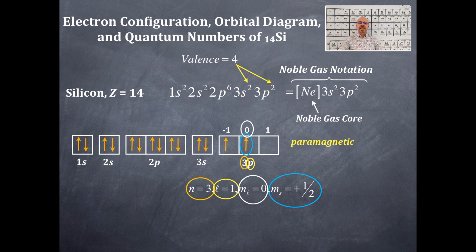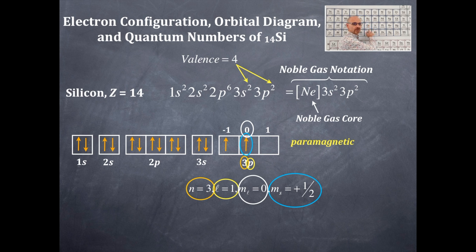Hopefully the electron configuration, orbital box diagram, valence electrons, paramagnetism, diamagnetism, the noble gas notation, and the set of four quantum numbers all worked out for you. You should check with your periodic table so that you can get the set of four quantum numbers for any last electron in an element — it's right there on that periodic table.